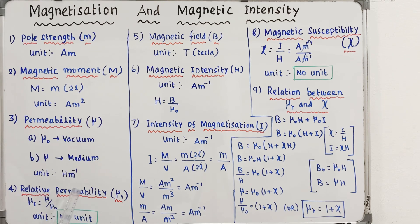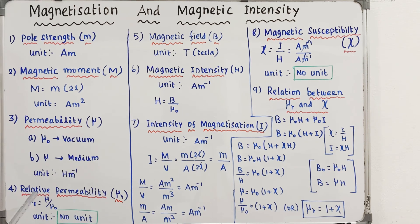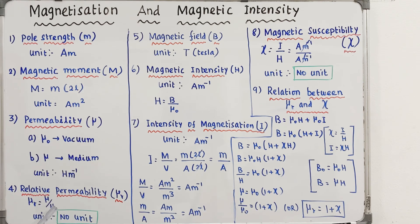The relative permeability, μr, is the ratio of mu to mu-naught: μr = μ / μ₀. Since it is a ratio, the units cancel, so relative permeability has no unit. Similarly, relative permittivity in electrostatics also has no unit.